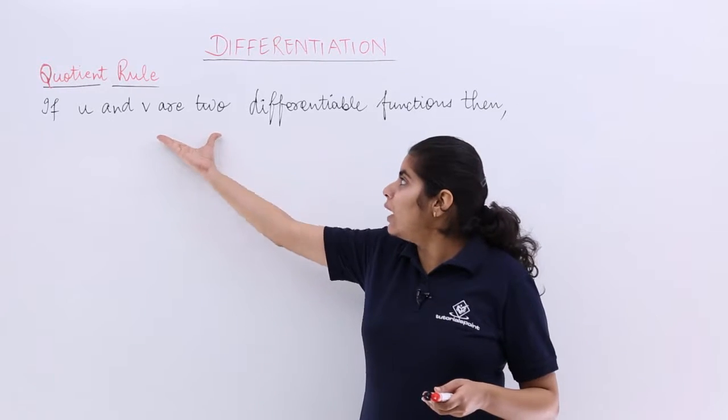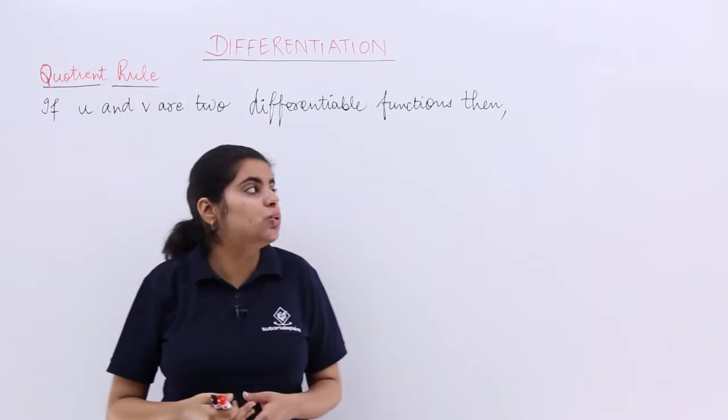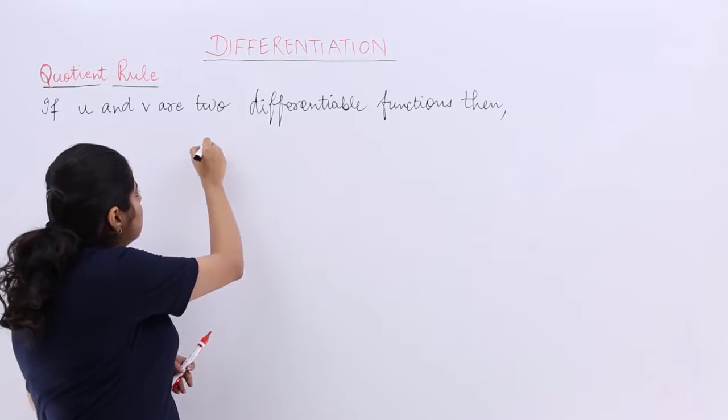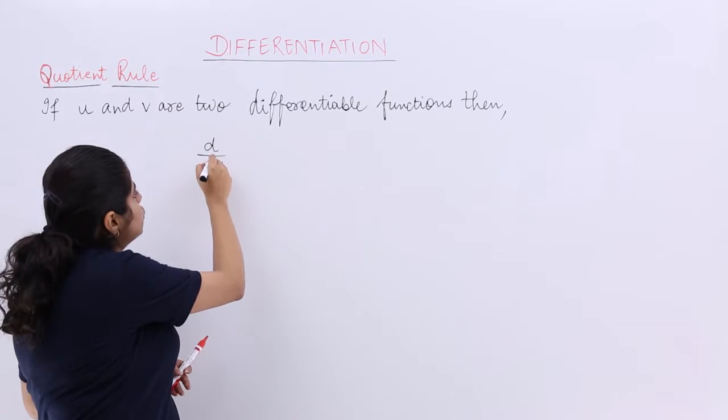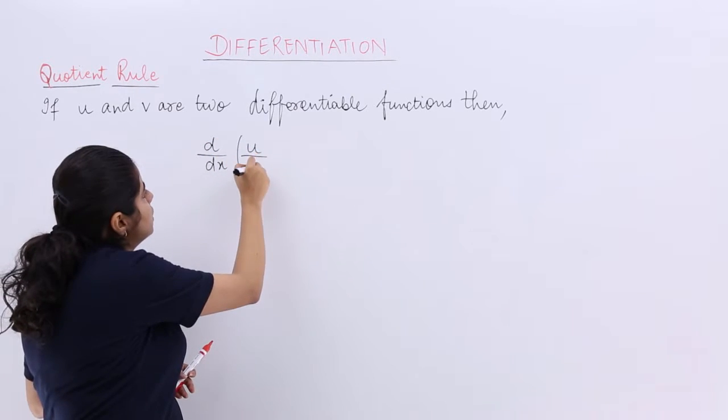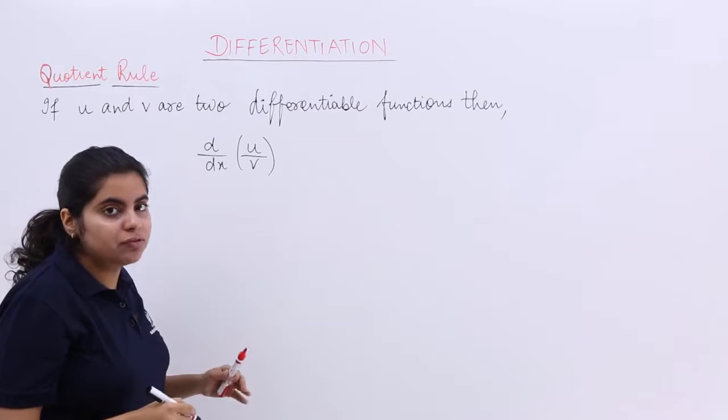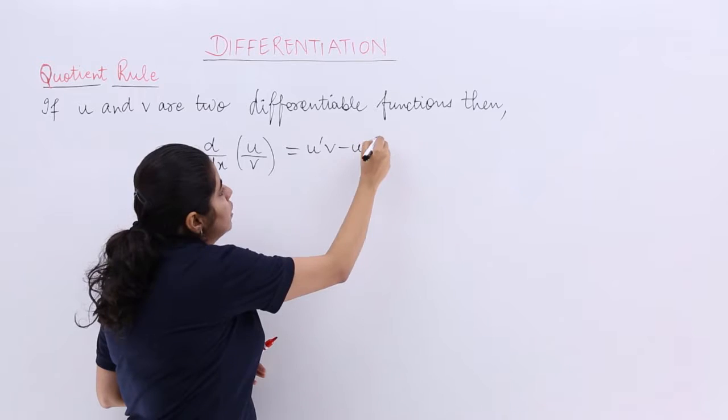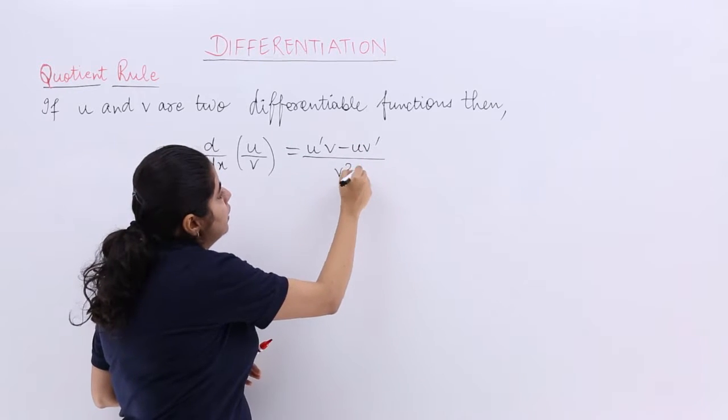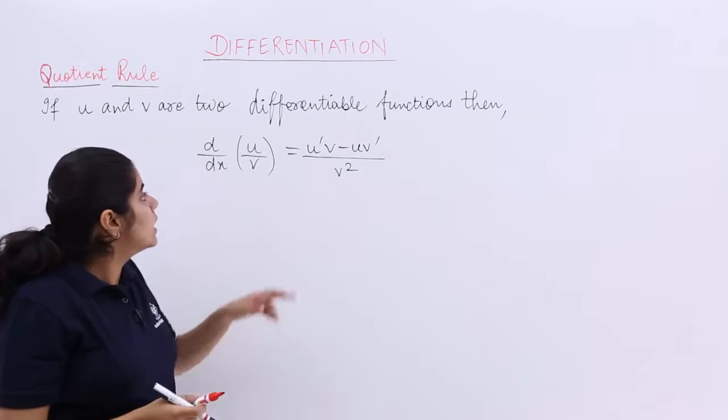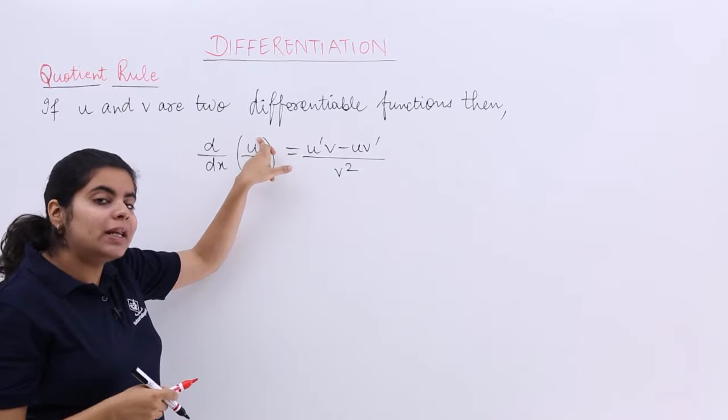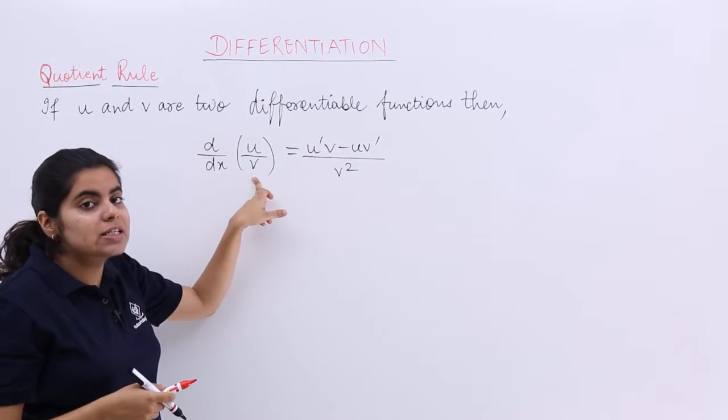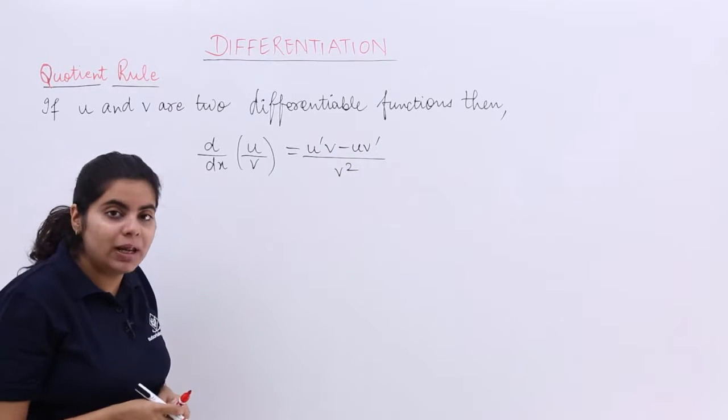That means if u and v are given to me as two differentiable functions, then if I have to calculate the differentiation of their division, that means of the quotient. What is the formula? It is nothing but u'v minus uv' whole upon v square. That means the first function in the numerator, say it is u, the denominator function if it is v, this formula would apply.